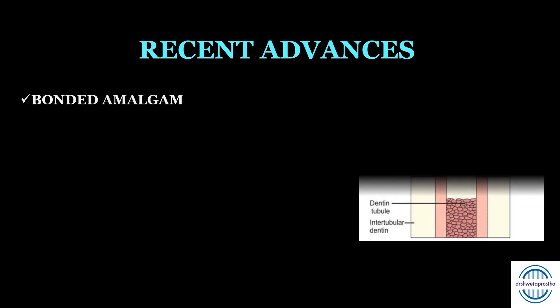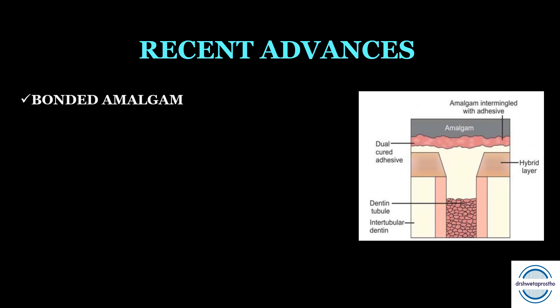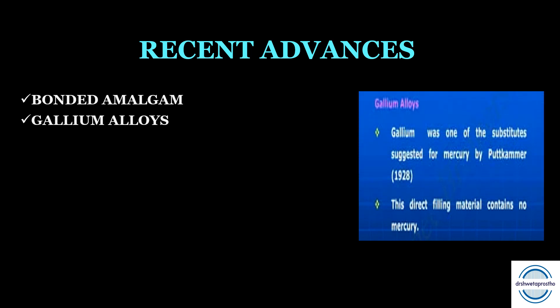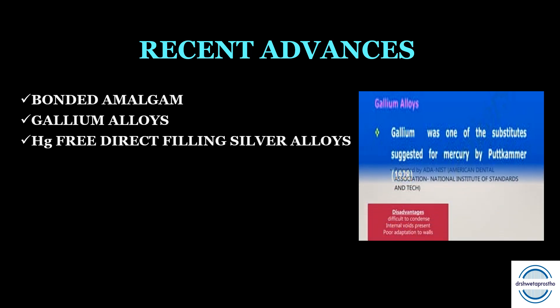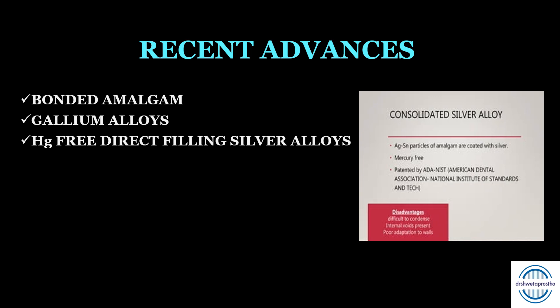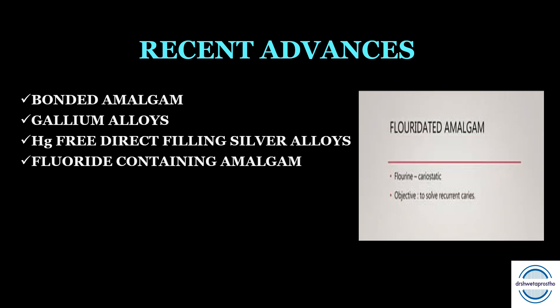Recent advances in dental amalgam include bonded amalgam, where adhesive systems bond amalgam to enamel and dentine. Gallium alloys were introduced to develop mercury-free restorative material; silver-gallium has physical and mechanical properties similar to or better than silver amalgam. Mercury-free direct filling silver alloys have mercury coated on silver-tin particles that can be self-welded by compaction. Fluoride-releasing amalgam contains fluoride-leachable or acid-etchable glass particles, reducing secondary decay and providing a cariostatic effect on surrounding tooth structure.